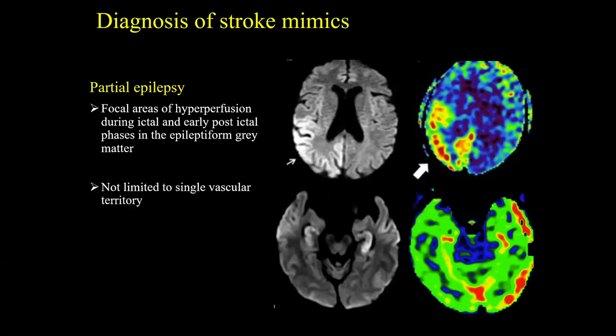The next application is to confidently diagnose stroke mimics. We do see cases where there is an area of restricted diffusion but on ASL there is hyperperfusion. Since hyperacute and acute infarcts are expected to be hypoperfused, when we see restricted diffusion with hyperperfusion — and a distribution inconsistent with vascular territory — it was interpreted as postictal change rather than an infarct.